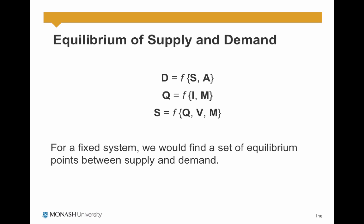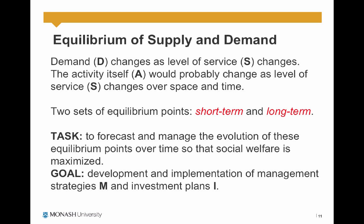If we put all these equations together, we can find an equilibrium of supply and demand. For a fixed system, we find a set of equilibrium points between supply and demand. Demand changes as level of service or supply changes, and the allocation of activities in space would probably also change as level of service or supply changes. So demand and supply are closely related. There are two sets of equilibrium points: short-term equilibriums and long-term equilibriums.